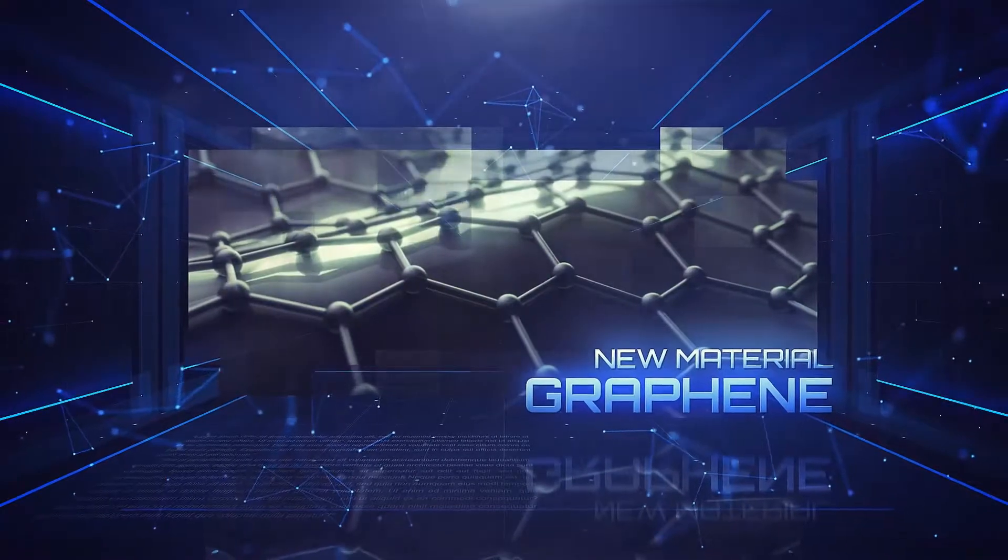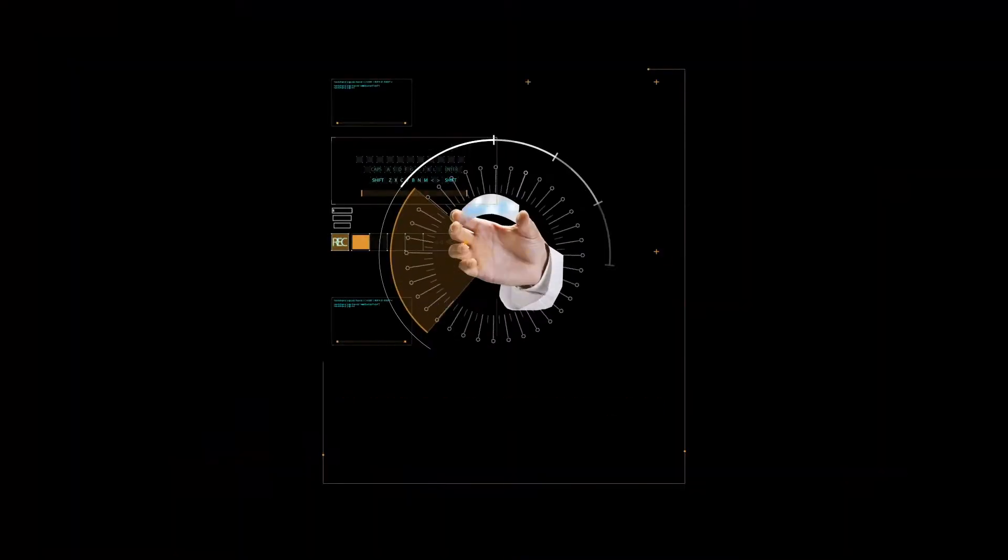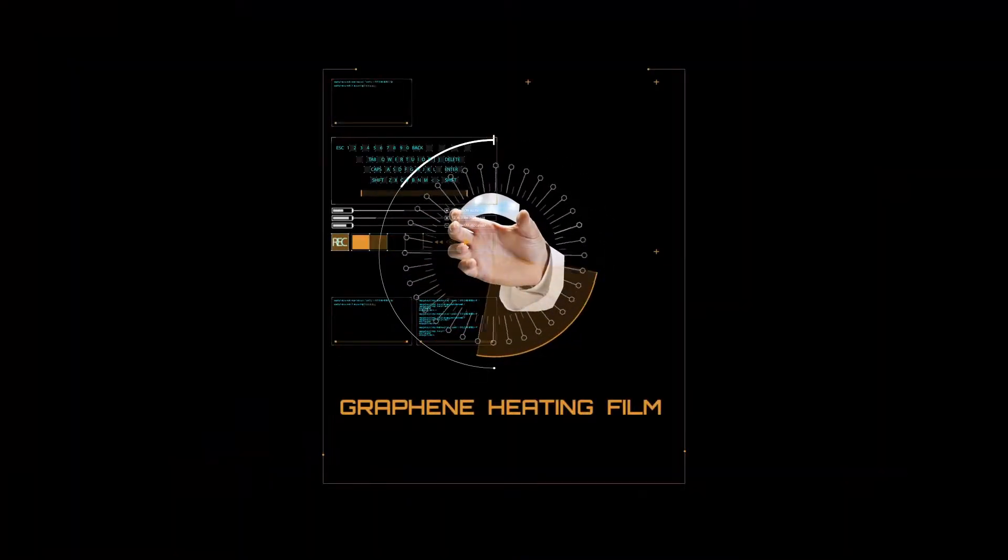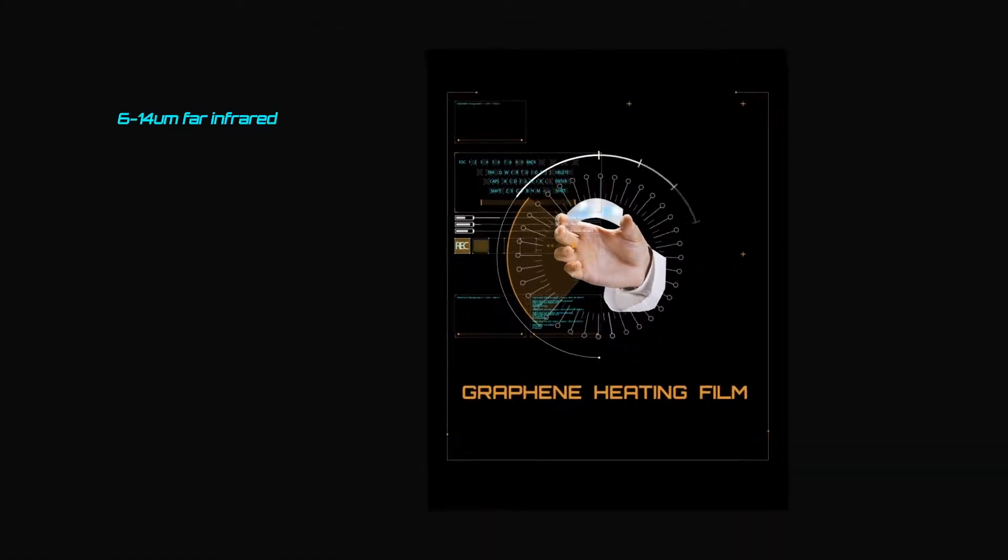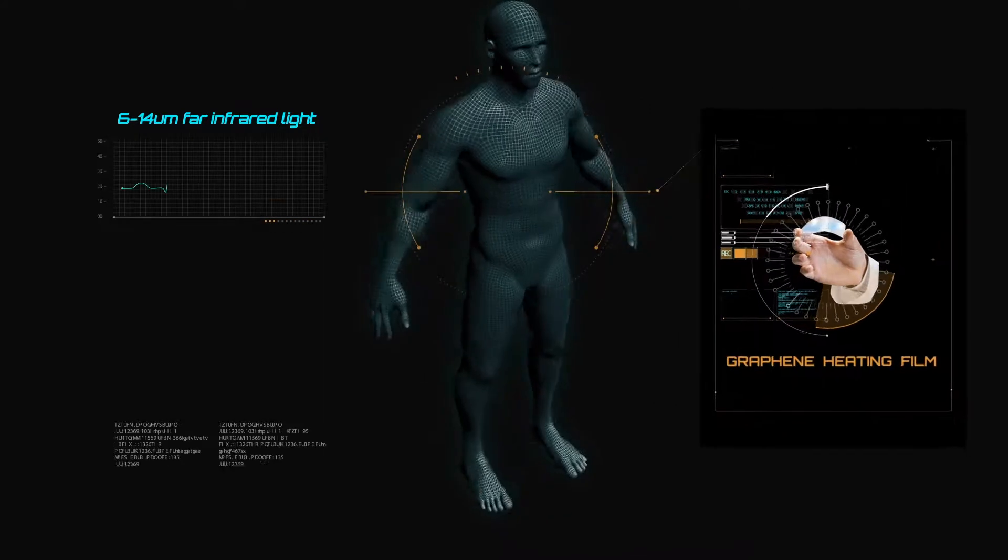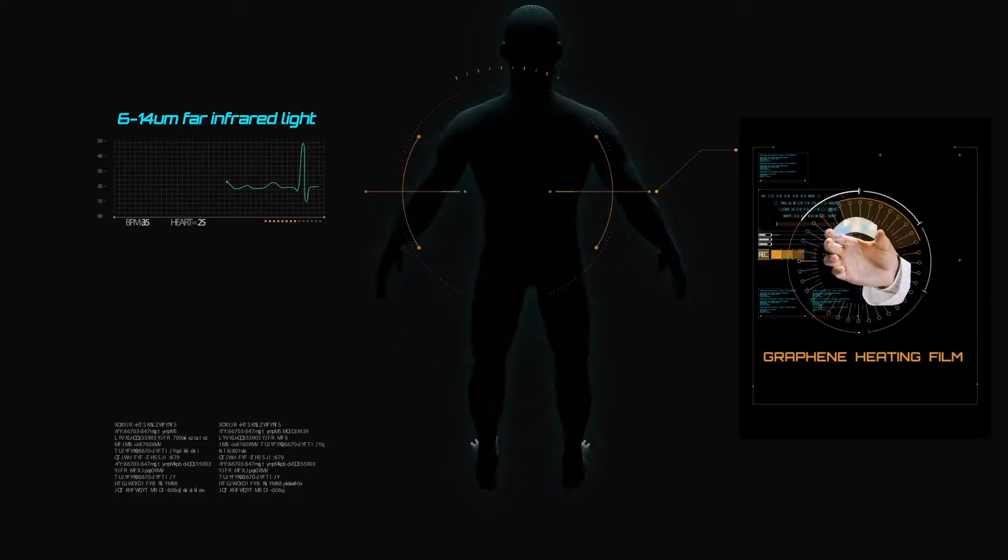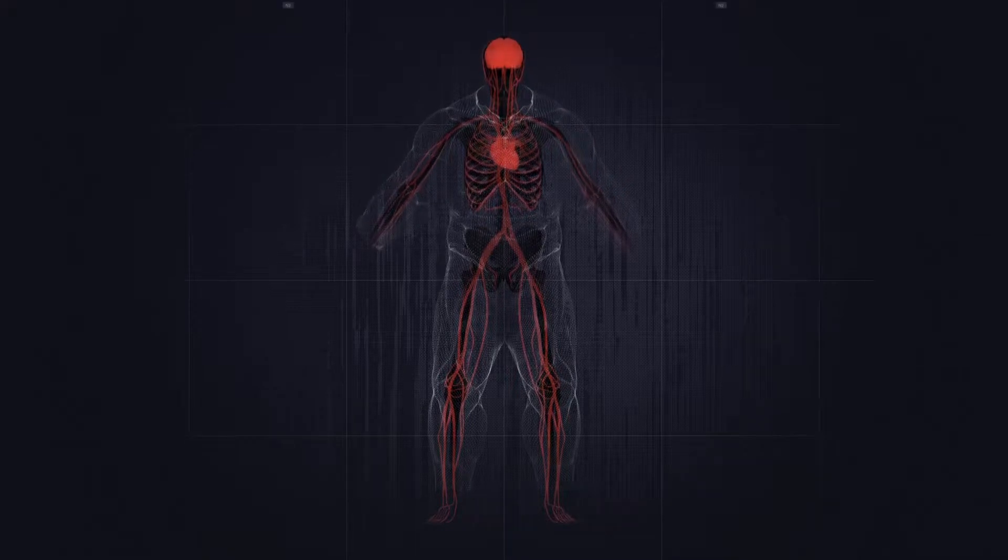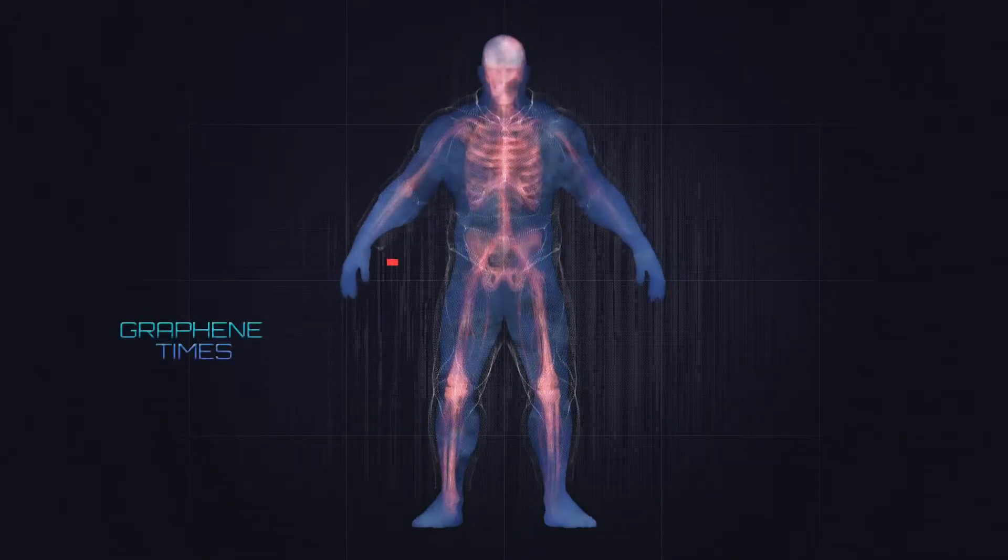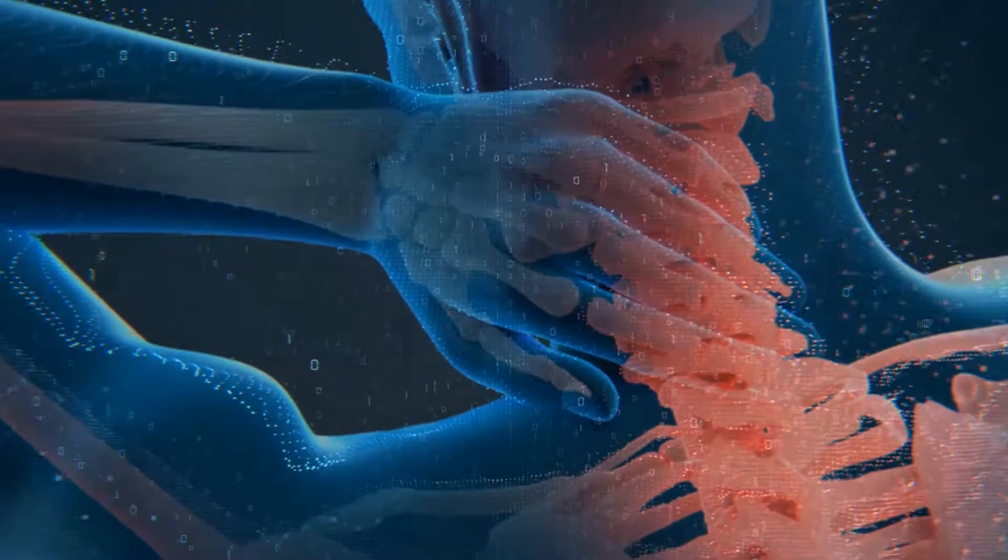Authoritative tests show that the graphene heating film can emit 6 to 14 micrometer far infrared light, which is very close to the human body itself. The far infrared can penetrate deeply into our subcutaneous tissue and generate a resonance effect, causing blood capillaries to dilate and promote blood circulation.